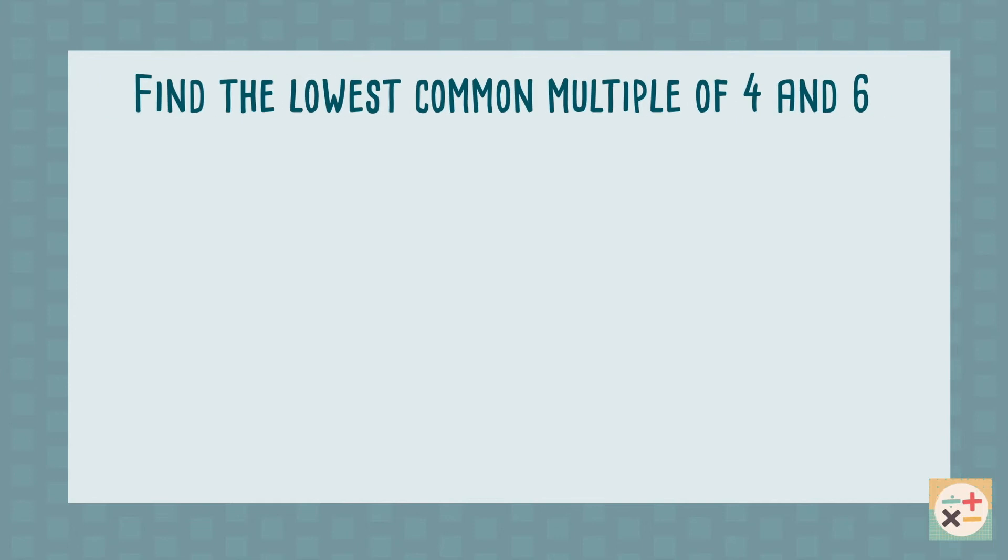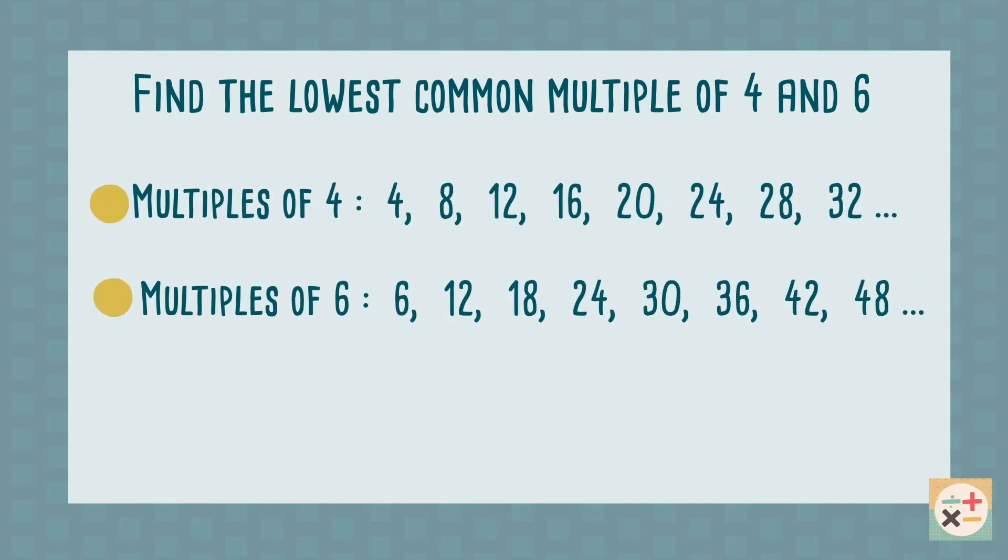For the first method, list some of the first multiples for each number in question. Then we can circle any numbers which appear in all of the lists. If none appear, write out the next five or ten multiples of each number.